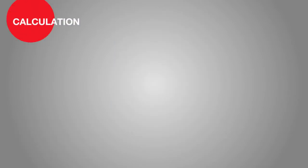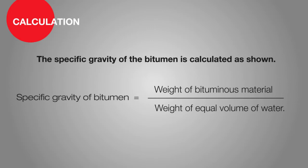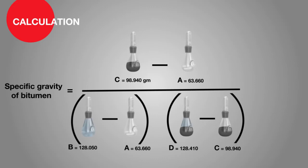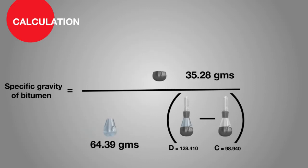The specific gravity of the bitumen is calculated as shown. Specific gravity of bitumen equals weight of bituminous material upon weight of equal volume of water, that is C minus A upon B minus A minus D minus C.